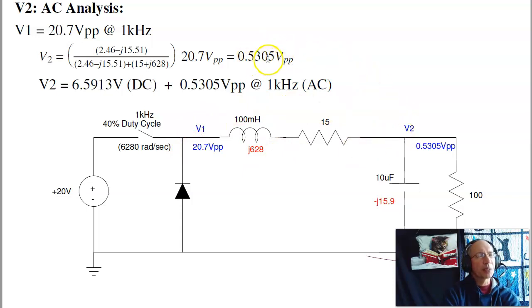Put the two together that says that V2 should be on average 6.959 volts in DC with a 0.53 volt ripple at 1 kilohertz.